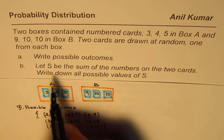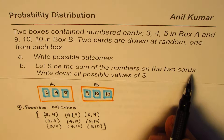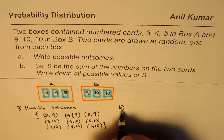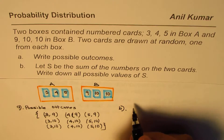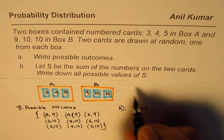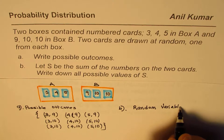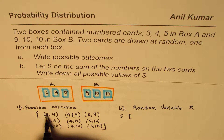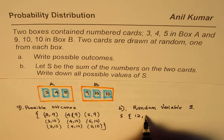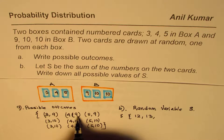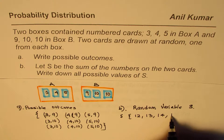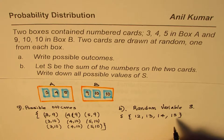For part B, let S be the sum of the numbers on the two cards — a discrete random variable. The possible values of S are: 3+9=12, 3+10=13, 3+10=13, 4+9=13, 4+10=14, 5+9=14, 5+10=15. So S can take four distinct values: 12, 13, 14, and 15.